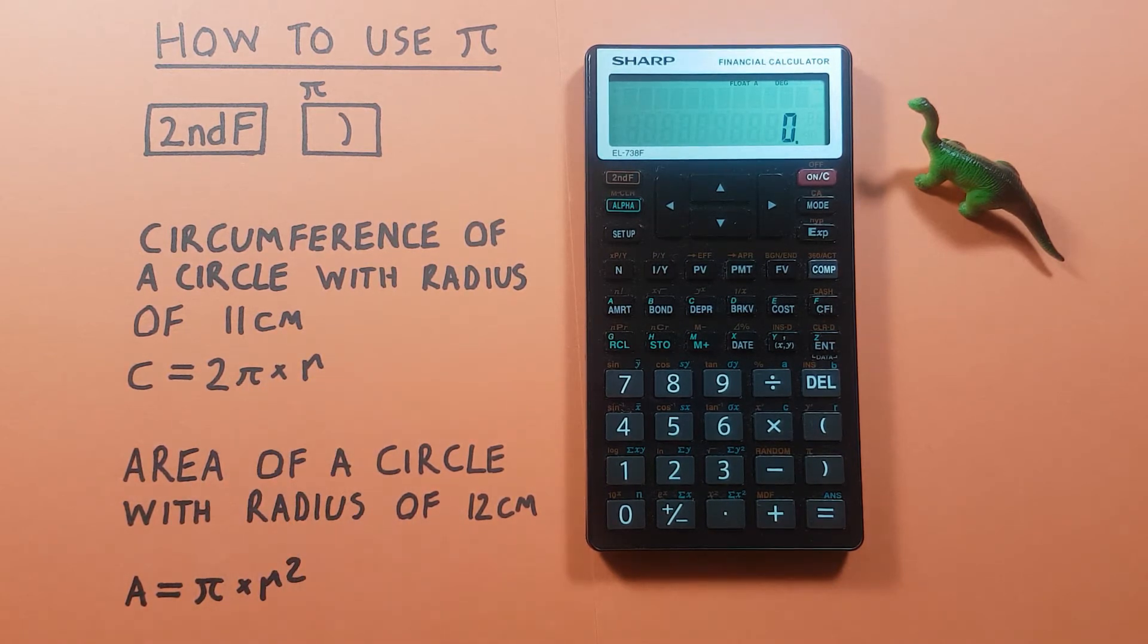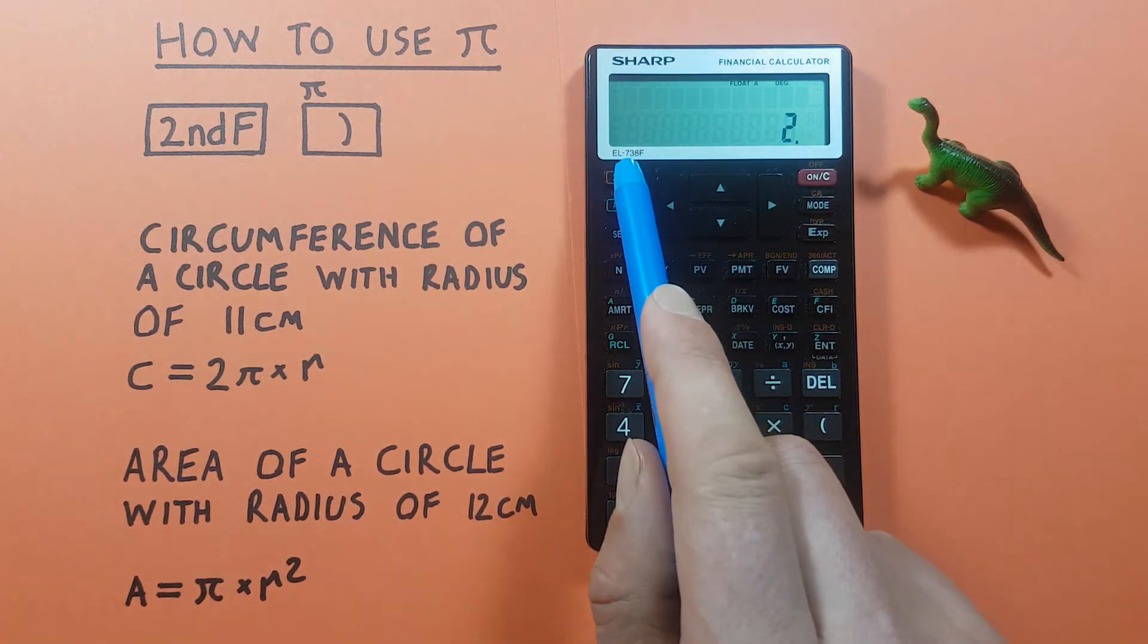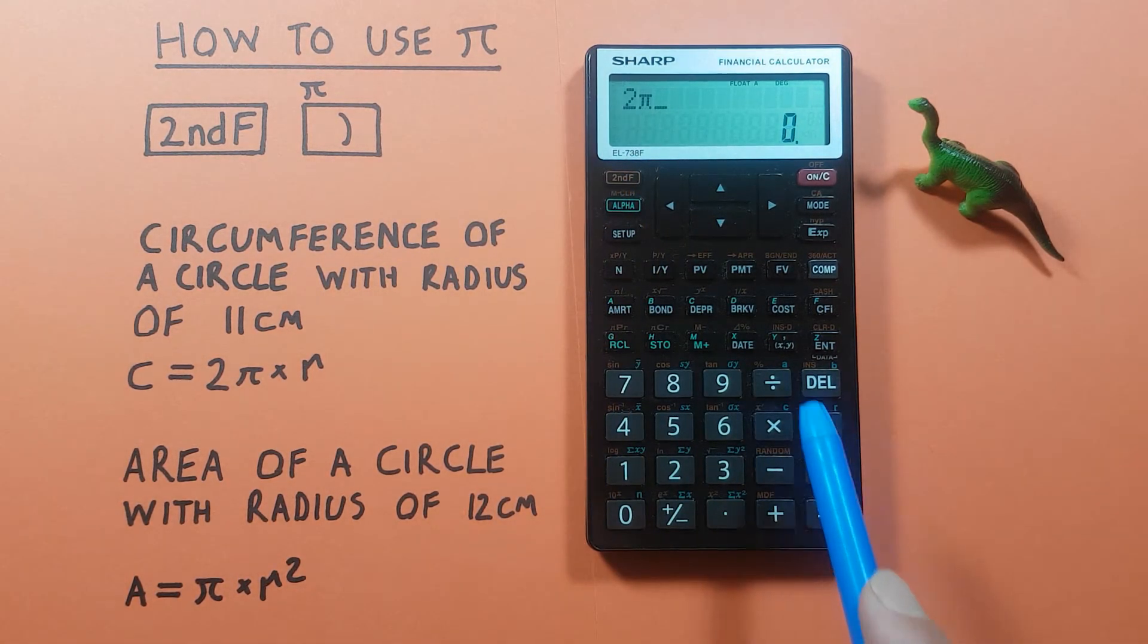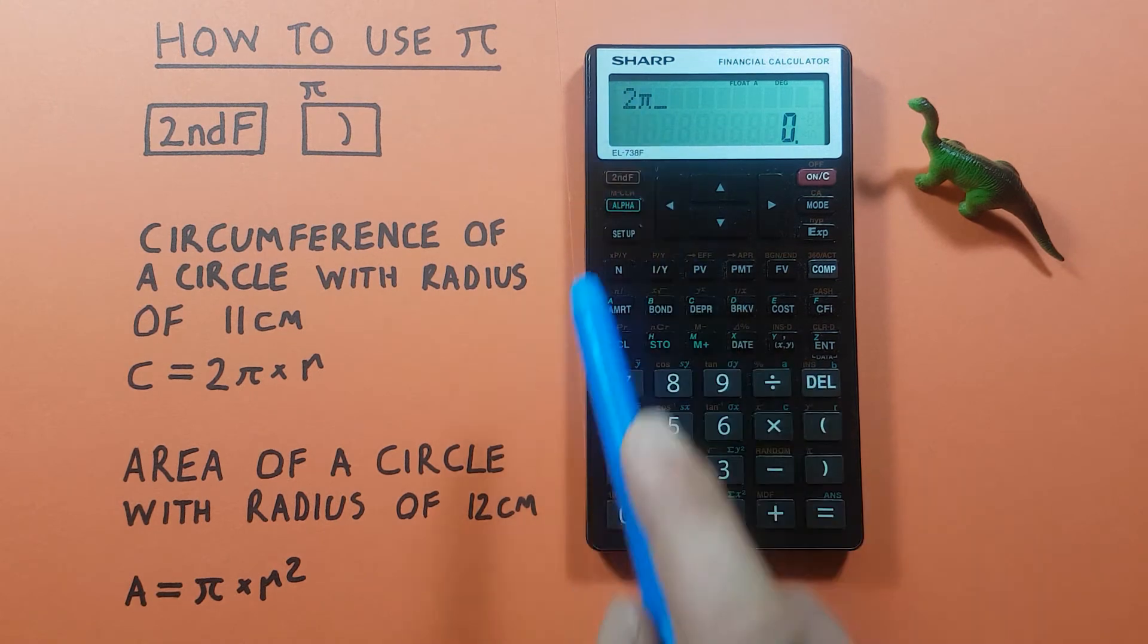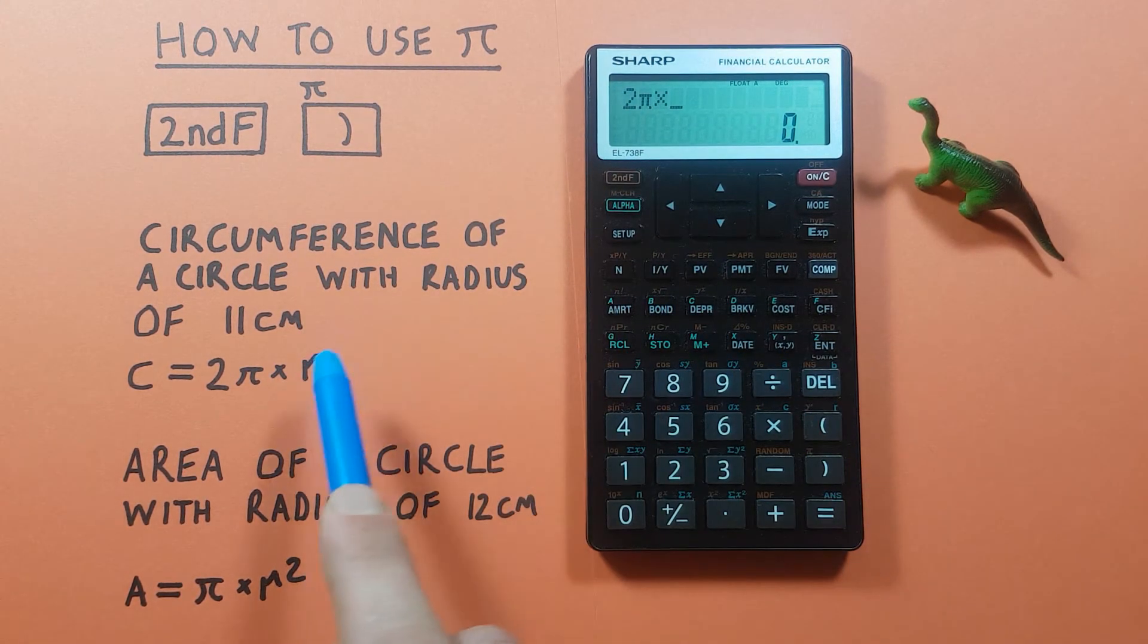We would enter it like this: 2, and then second PI—there's our PI—so 2π times R, which is our radius of 11, then press equals.